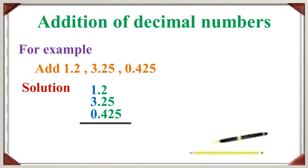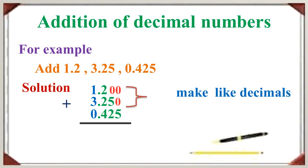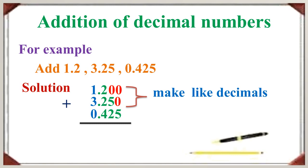Now compare whether these are like decimals or unlike decimals. Are they like decimals? No. These are called unlike decimals. Now we are going to make them like decimals. So, add 0 to the right side of the numbers to make them like decimals.